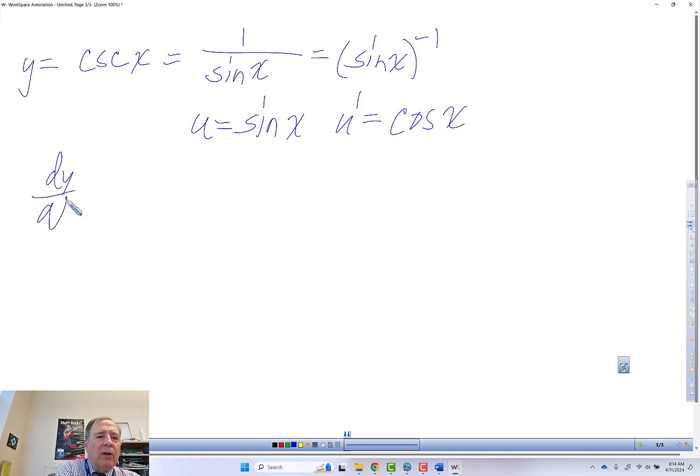So dy over dx is, we're going to use the power rule on this. So we're going to put the negative 1 over sine of x to the negative 1 in front times u prime, which is cosine x. And then we're going to subtract 1 from this. So this becomes sine of x to the negative 2.